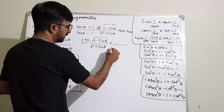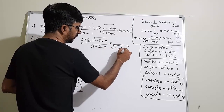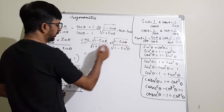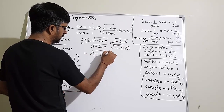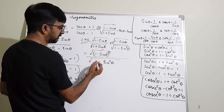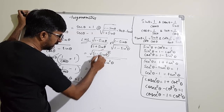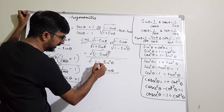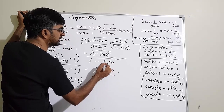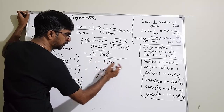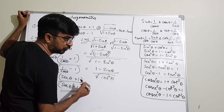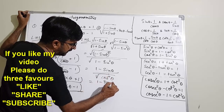Let me rationalize this. 1 plus sin θ is in the denominator, so I multiply numerator and denominator by 1 minus sin θ. In the numerator, under root of 1 minus sin θ multiplied by 1 minus sin θ gives a whole square. In the denominator we get under root of 1 minus sin² θ, which equals under root of cos² θ. Canceling the square root and the square, I get 1 minus sin θ upon cos θ.